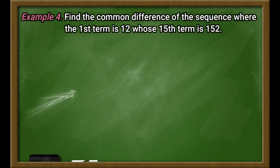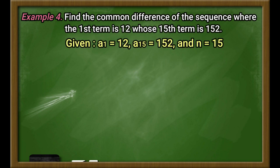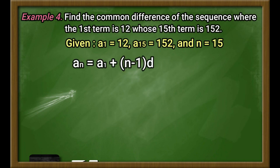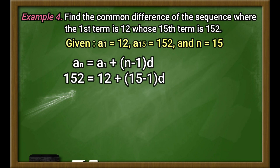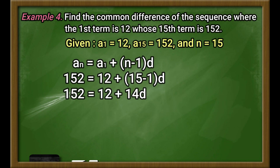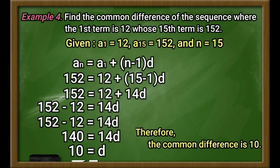Example number 4: Find the common difference of the sequence where the first term is 12 and whose 15th term is 152. Given: A sub 1 equals 12, A sub 15 equals 152, and n equals 15. Substituting the values, we get 152 equals 12 plus the quantity 15 minus 1 times d. Therefore, 152 equals 12 plus 14d. By simplifying, we get d equals 10. Thus, the common difference is 10.